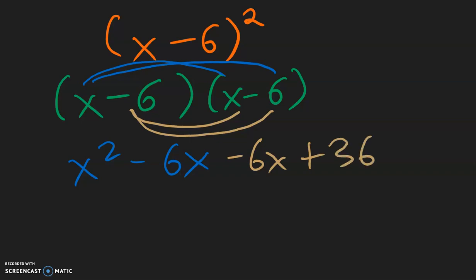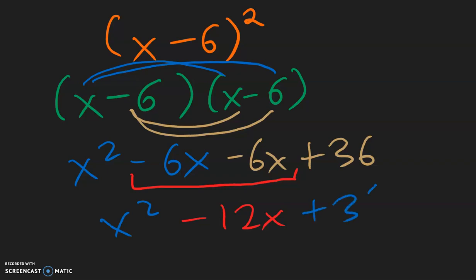Now combining like terms, we see that negative 6x and negative 6x can go together into negative 12x. And everything else just bring it down: x squared minus 12x plus 36. And that is the answer.